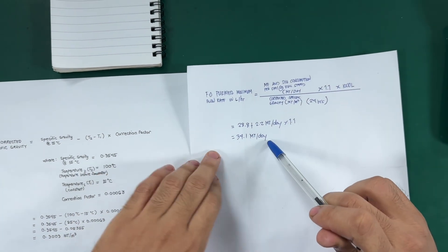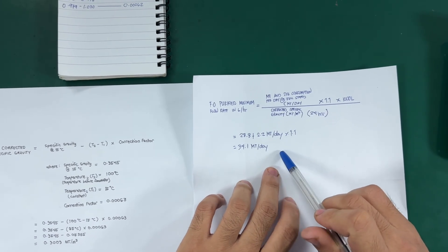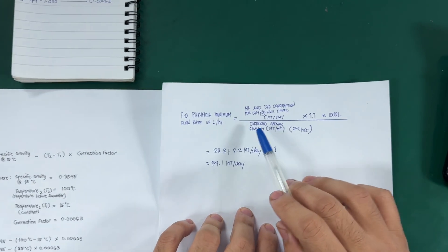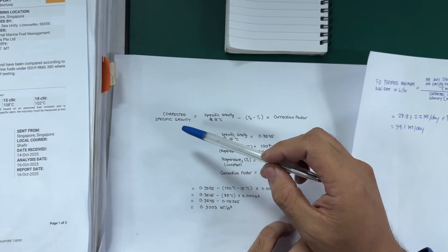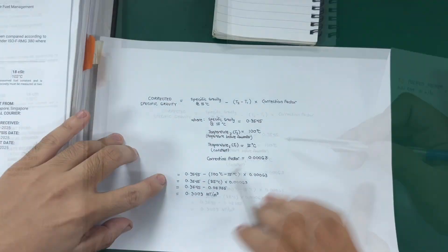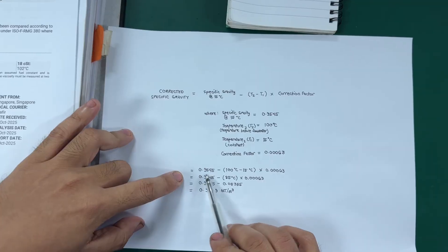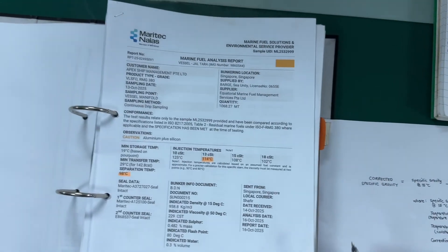So here, 34.1 metric tons per day, we will convert it to cubic meter per day by dividing corrected specific gravity. How to solve the corrected specific gravity? So here's the formula. So here, 0.9545, you can see here at the fuel analysis report.